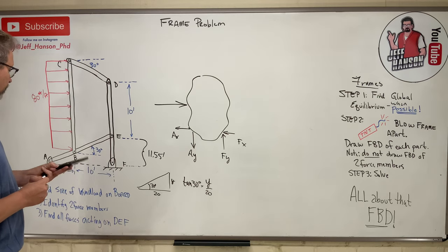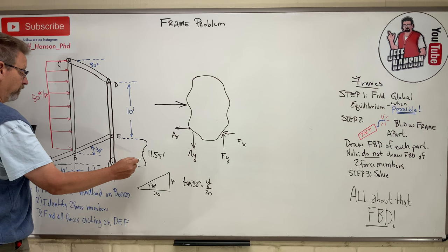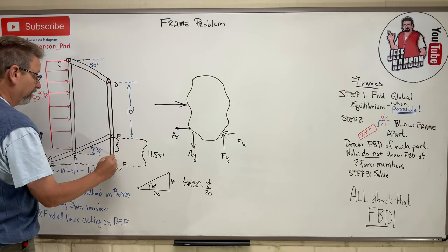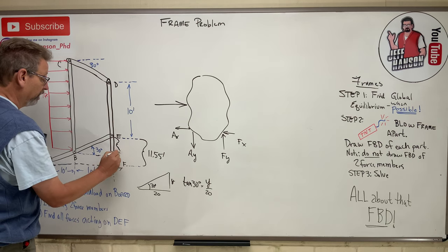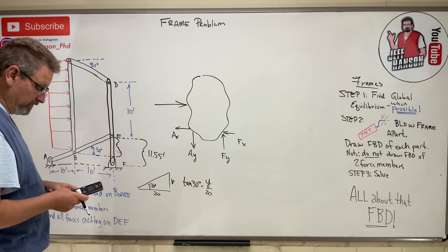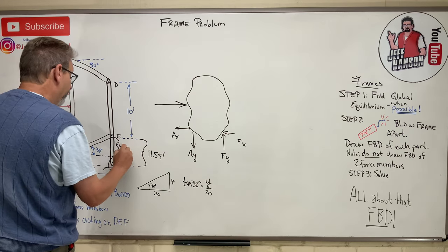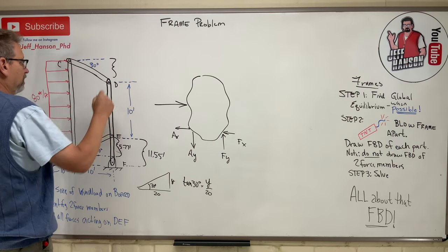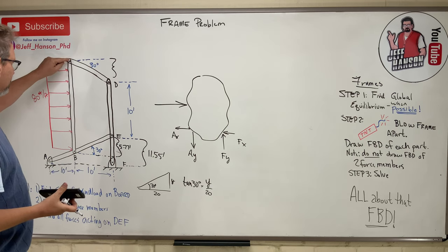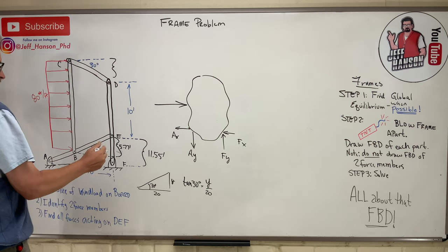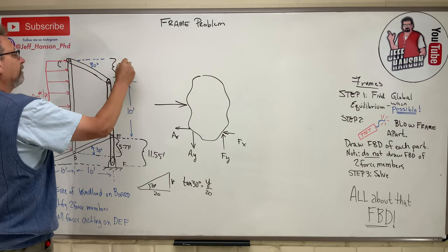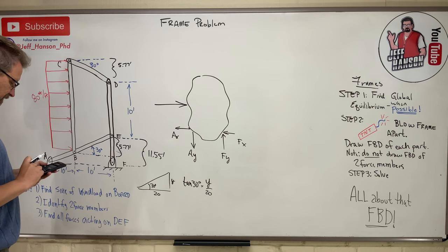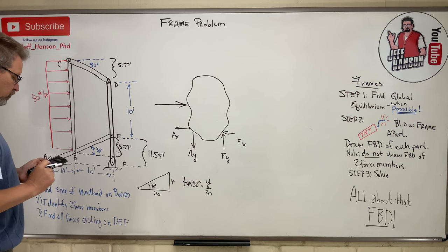Now using similar triangles — if that distance is 11.55 and the segments are each 10, then the partial distance is half of 11.55, which is 5.77. The same 5.77 applies on the other side by symmetry. So the total distributed load height is 10 + 10 + 5.77 × 2 = 21.55 feet.